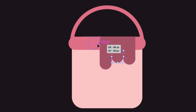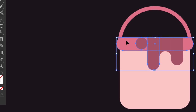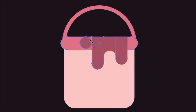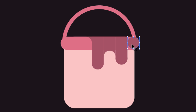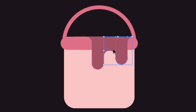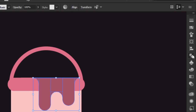Drag the circle and make it aligned with the three rectangles. With the shape builder, click on the negative space between to fill it. Then drag the circle and align it with the top of the bucket and the paint drop. Hold Shift and select the third element of the drop and the top element of the bucket, and with the shape builder, click on the negative space to fill it. Repeat the same process for the other side and take off the circle. Hold Shift and select all the elements of the paint drop, then go to the Pathfinder and click on Unite.